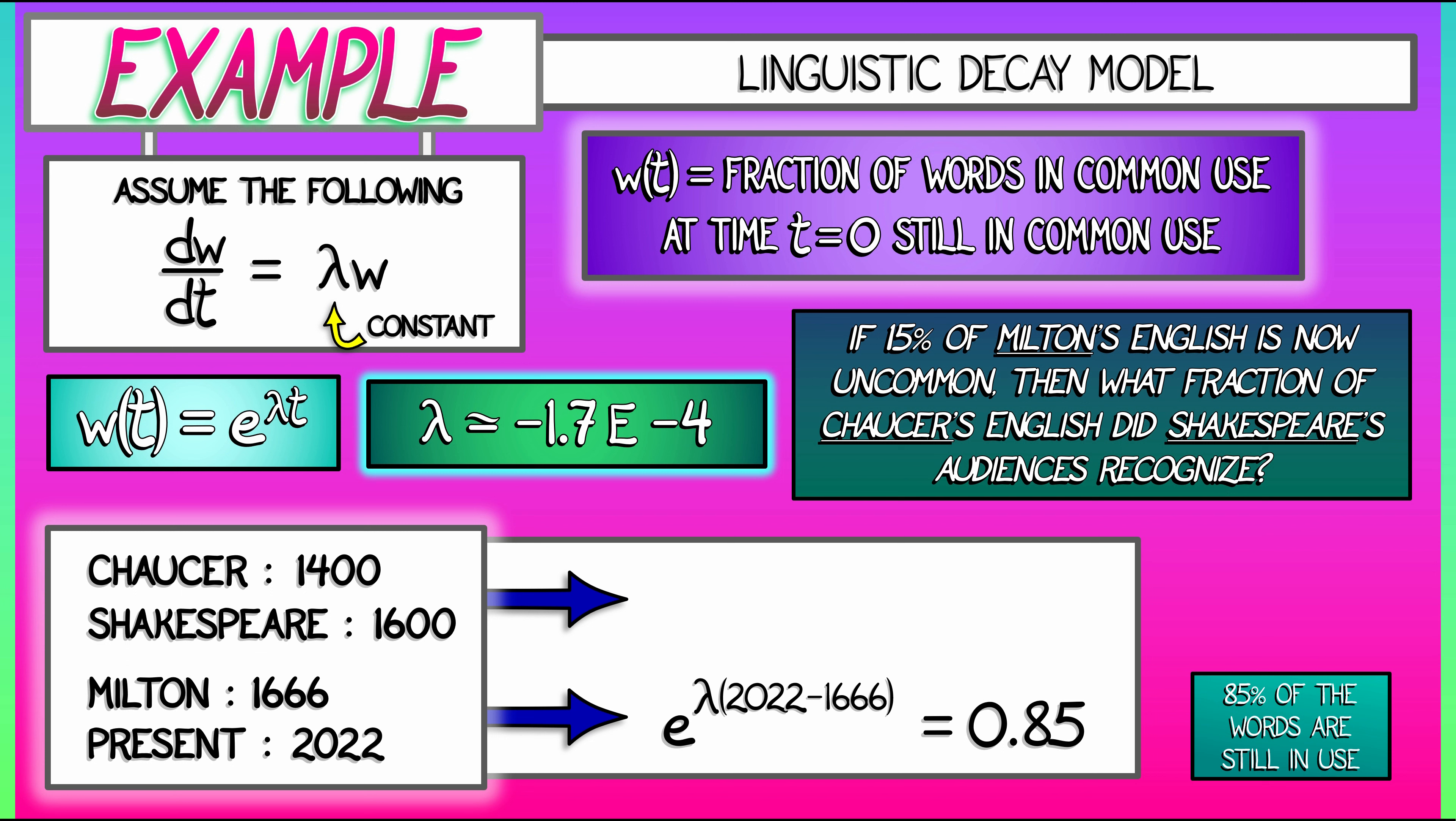From Chaucer to Shakespeare, that's 200 years, e to the lambda times (1600 minus 1400) equals the fraction of the words that would have been common to Shakespeare's audience. What is that? With that lambda, negative 1.7 times 10 to the minus 4, one gets 0.966.